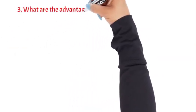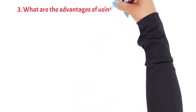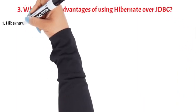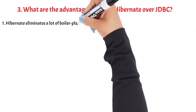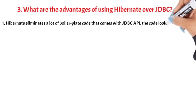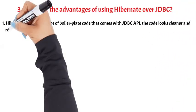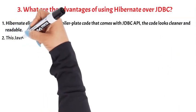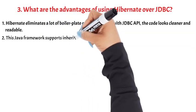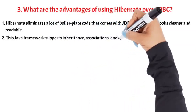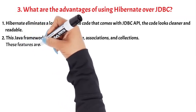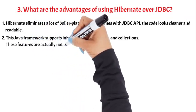Question 3: What are the advantages of using Hibernate over JDBC? First, Hibernate eliminates a lot of boilerplate code that comes with JDBC API — the code looks cleaner and readable. Second, this Java framework supports inheritance, associations, and collections. These features are actually not present in JDBC.